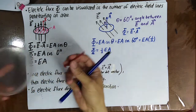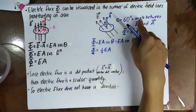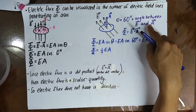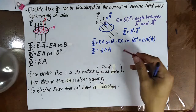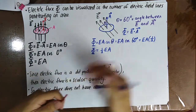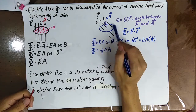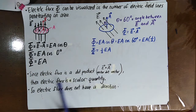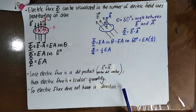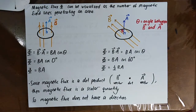A is the area vector of the surface area. Theta is the angle between E and the area vector — not the surface area itself. The angle must be from E to A, not between E and the surface area. Since electric flux is a dot product, it is a scalar quantity and does not have a direction.